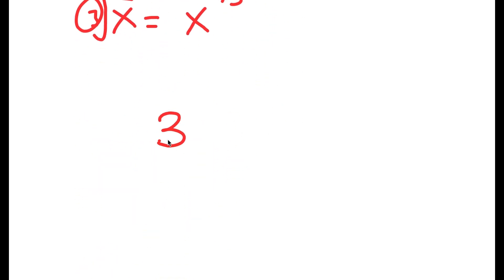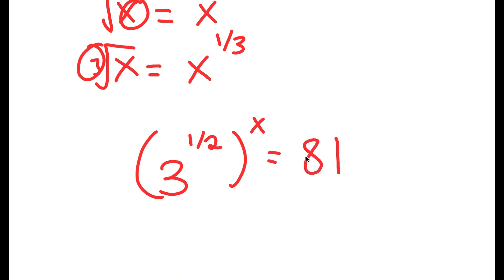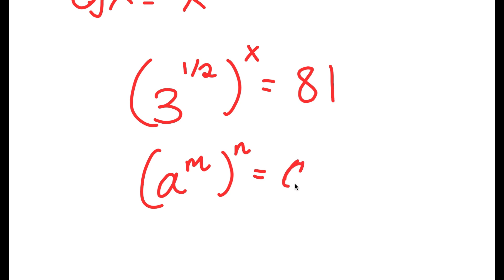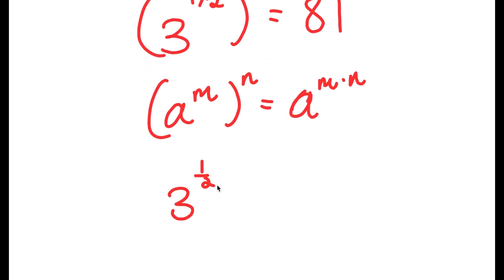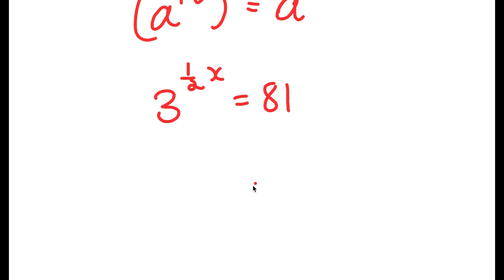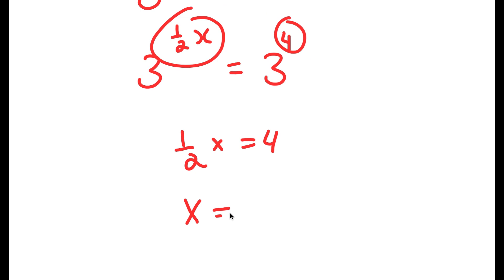If I substitute 3 to the power of 1 half for the square root of 3, I get 3 to the power of 1 half, to the power of x, is equal to 81. Now, if I have something in the form a to the power of m to the power of n, this equals a to the power of m times n. So this becomes 3 to the power of x over 2 is equal to 81. Since 81 is the same as 3 to the power of 4, we get x over 2 equals 4, so x is equal to 8.